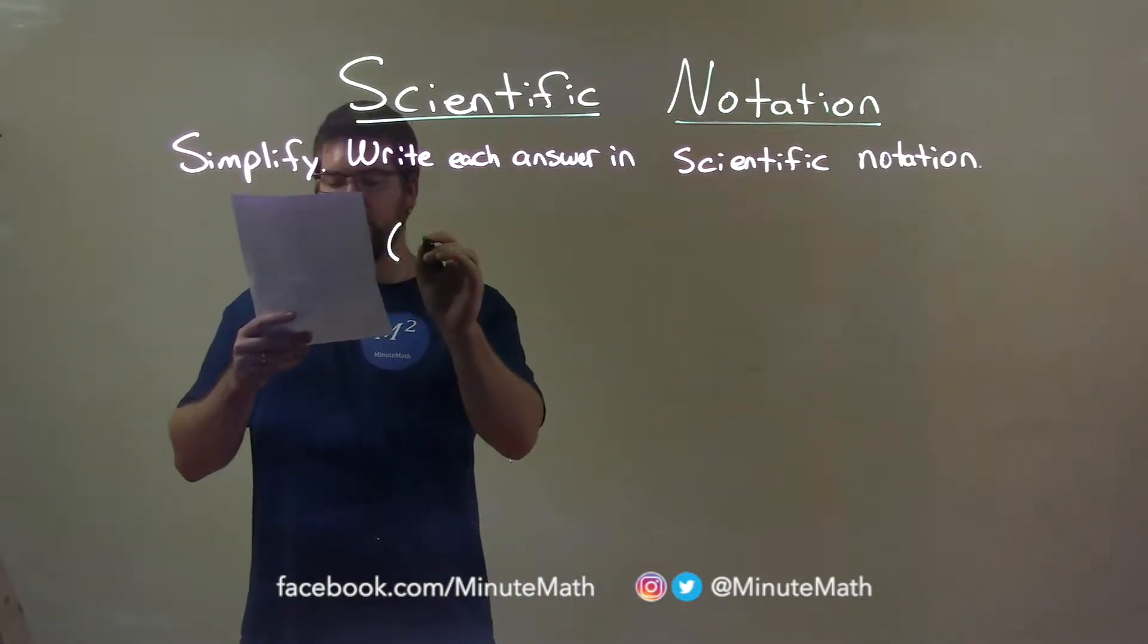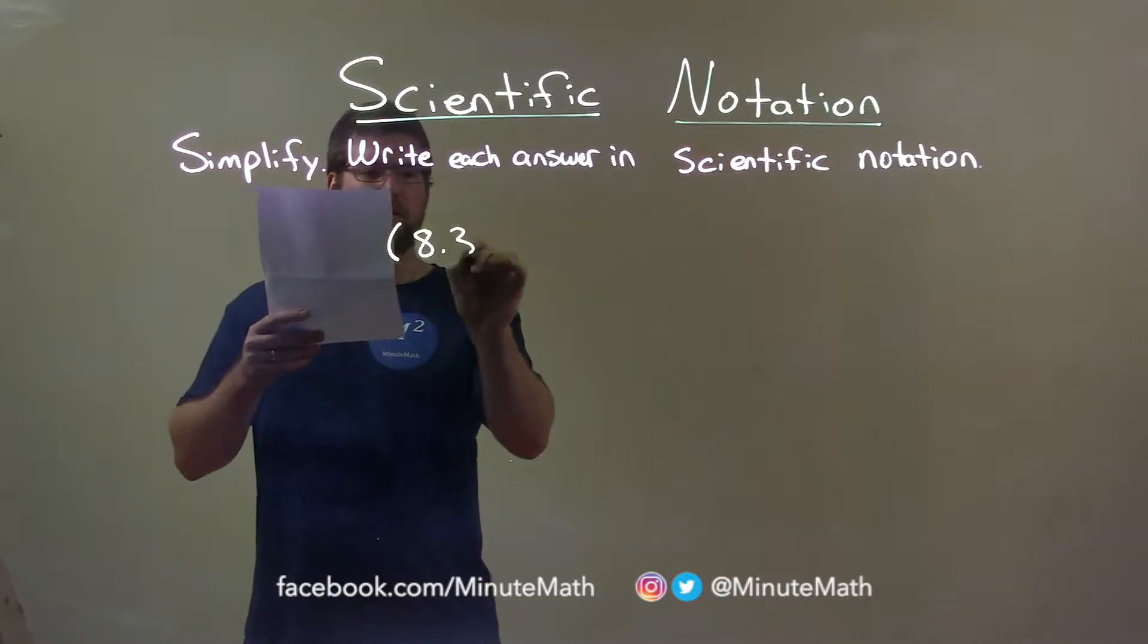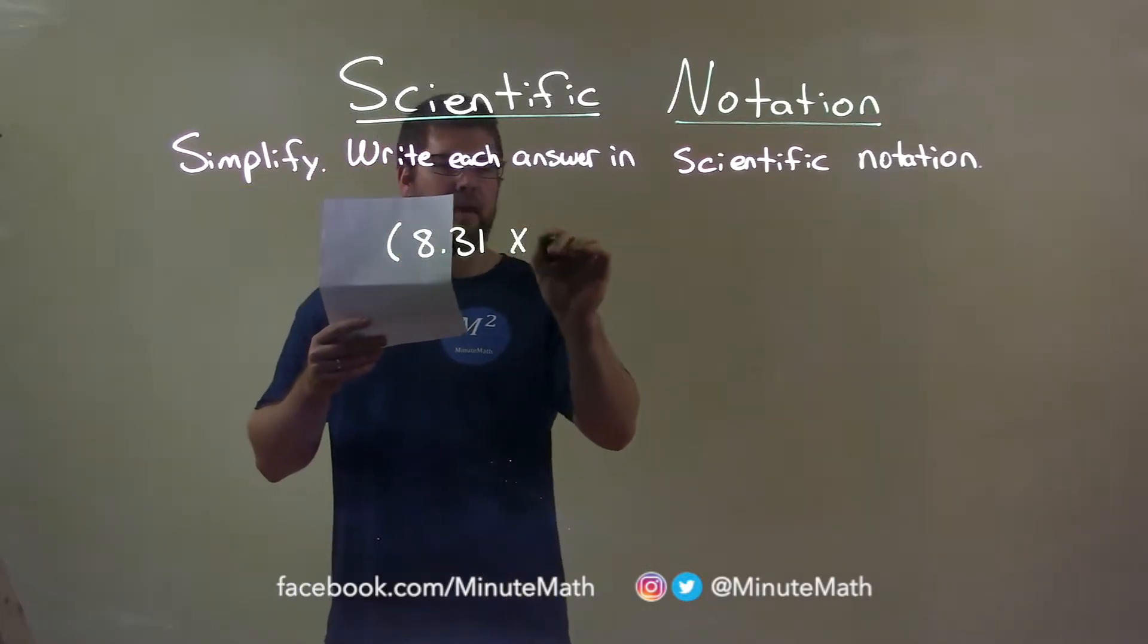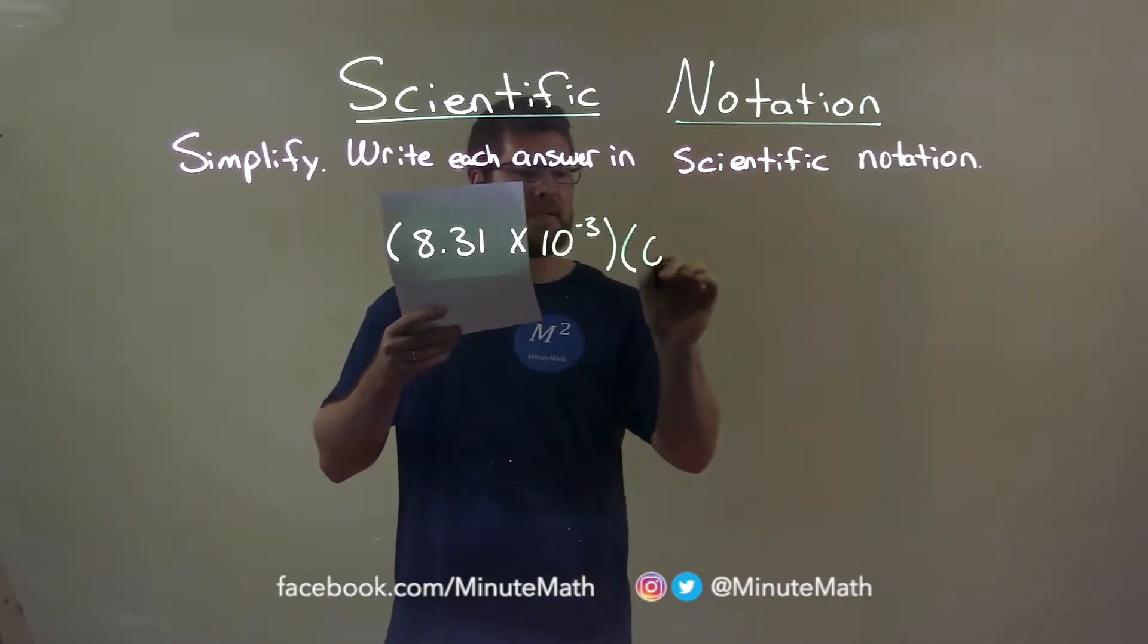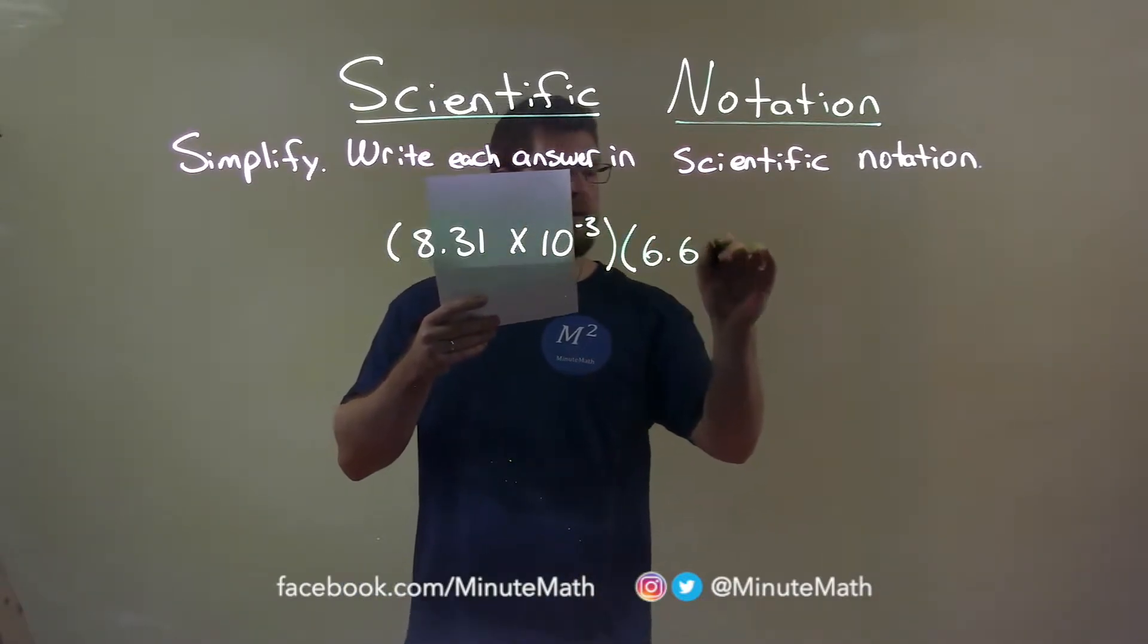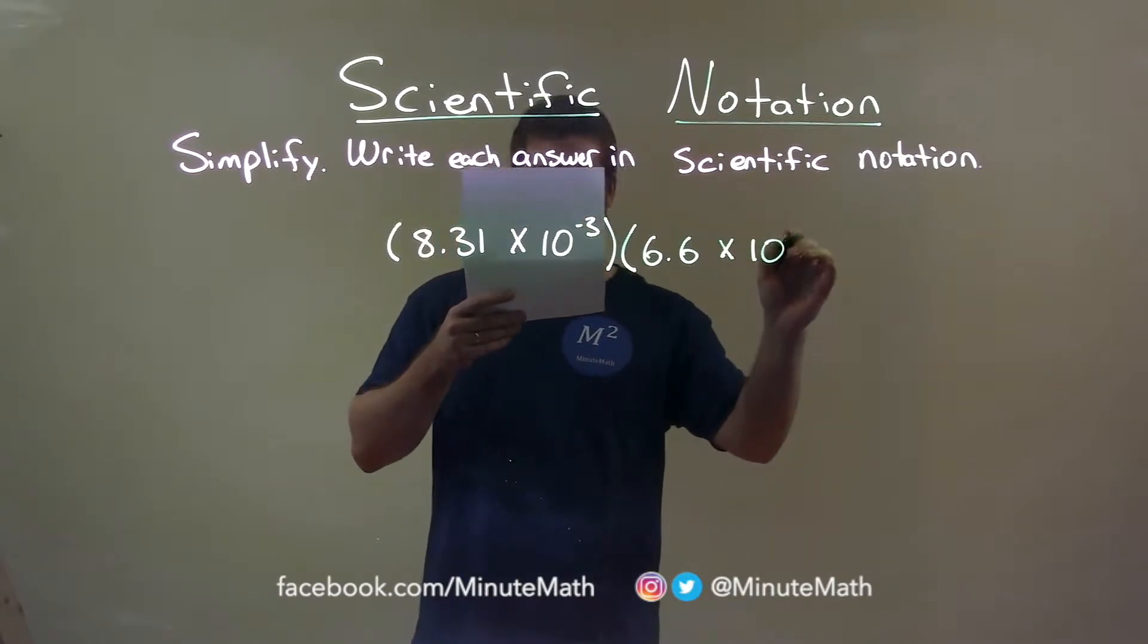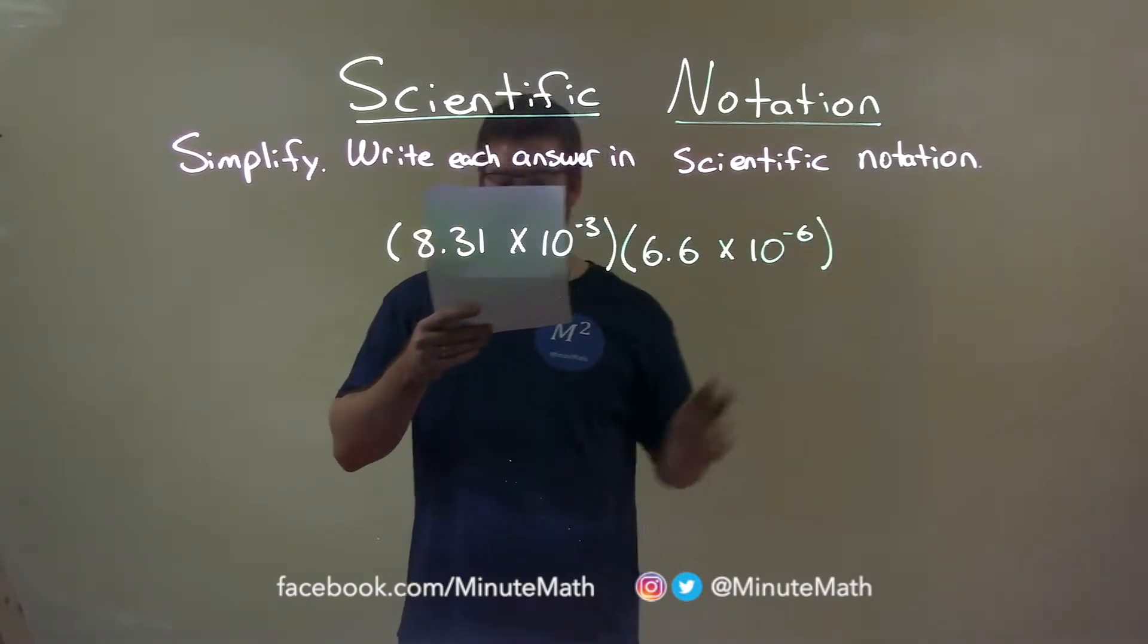8.31 times 10 to the negative third power, multiplied by 6.6 times 10 to the negative sixth power.